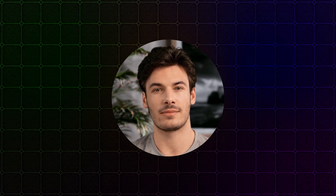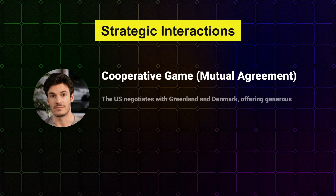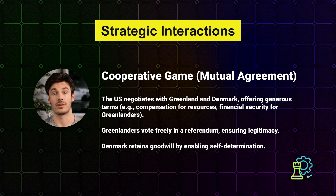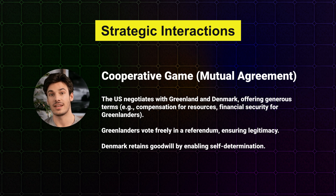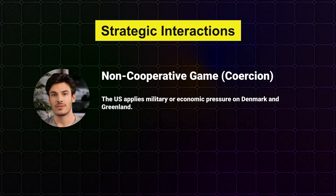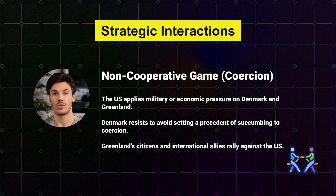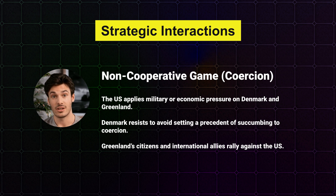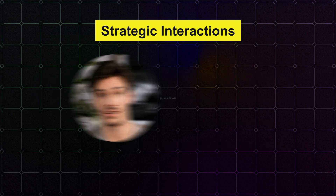Let's explore three possible scenarios given the payoffs and other information. Scenario 1 — Cooperative game: The U.S. negotiates with Denmark and Greenland, offering benefits like infrastructure investment, financial security, and guarantees of self-determination. This is a win-win strategy where all players achieve mutually beneficial outcomes. Scenario 2 — Non-cooperative game: Coercion or pressure from one player leads to resistance and backlash from others, resulting in a lose-lose outcome where all players end up worse off. The third scenario is that no one makes a move and everything remains as it is, but this will have opportunity cost.